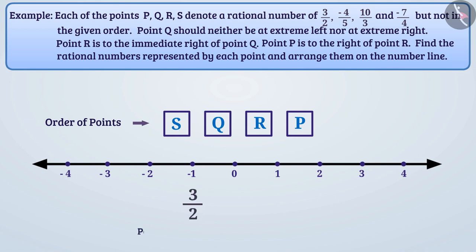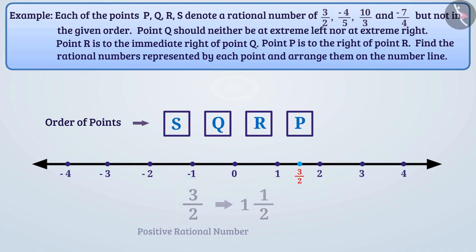3 by 2 is a positive rational number. We can write this as 1 and 1 by 2. Hence, its position is between 1 and 2. To find the right place, we divide the distance between 1 and 2 into 2 parts (as many as the denominator). Since the numerator is 1, by taking one of these two parts, we denote 1 and 1 by 2, or 3 by 2. Similarly, we will denote minus 4 by 5, 10 by 3, and minus 7 by 4.